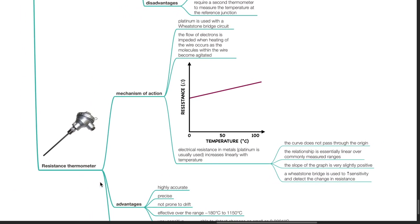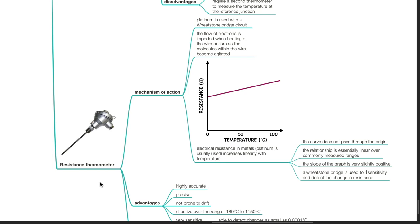Resistance thermometer — mechanism of action: platinum is used with a Wheatstone bridge circuit. The flow of electrons is impeded when heating of the wire occurs as the molecules within the wire become agitated. This graph illustrates electrical resistance in metals increasing linearly with temperature, with x-axis being temperature and y-axis measuring resistance in ohms. The curve does not pass through the origin. The relationship is essentially linear over commonly measured ranges, and the slope of the graph is very slightly positive. A Wheatstone bridge is used to increase sensitivity and detect the change in resistance.